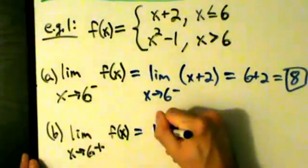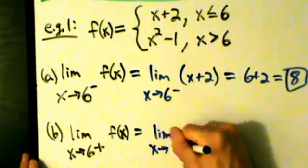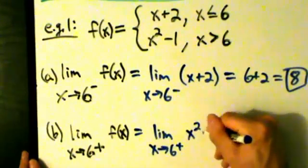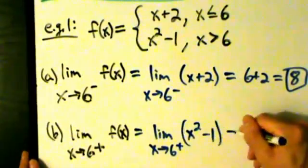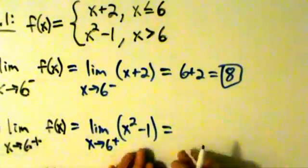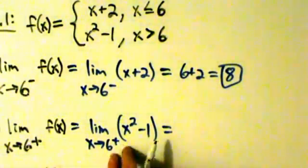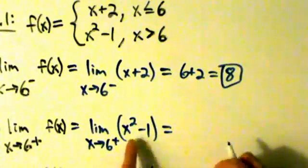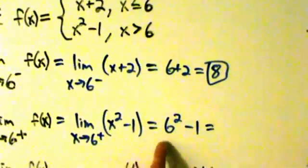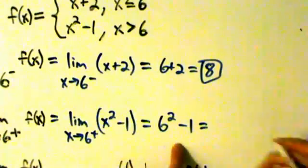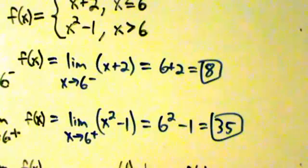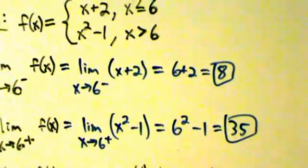This equals the limit as x approaches 6 from the right of the second piece, which is x squared minus 1. Now we can do direct substitution — the fact that it's a one-sided limit doesn't matter anymore. We take 6, put it in, and get 6 squared minus 1. 6 squared is 36, minus 1 is 35.